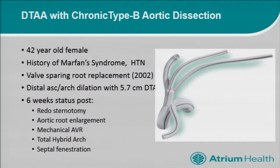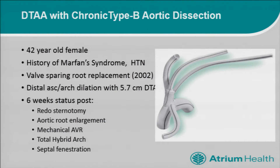This is a four-branch plexus graft that we use. The options here are really how you're going to platform yourself to perform the next operation, whether open or endovascular. Are you going to take an elephant trunk technique, which can be difficult with a small true lumen? Or do you want to platform the arch with a hybrid graft and take your branch vessels off as proximal as you can, close to the STJ, so that you have some Dacron to land in or sew to on the back end?